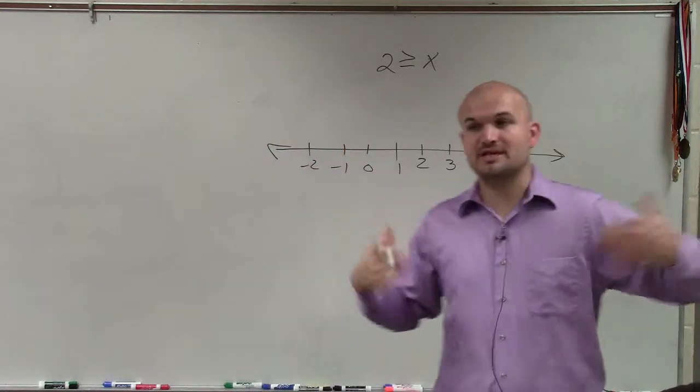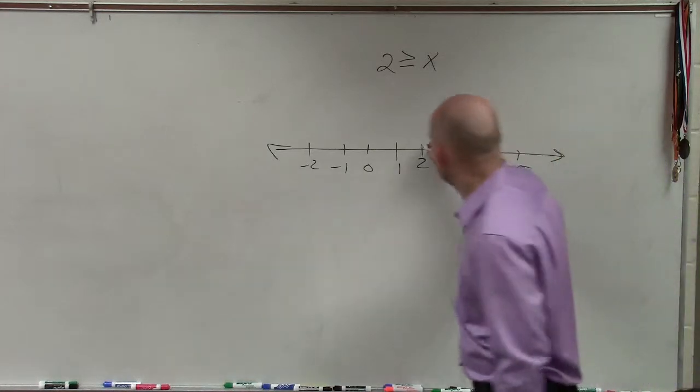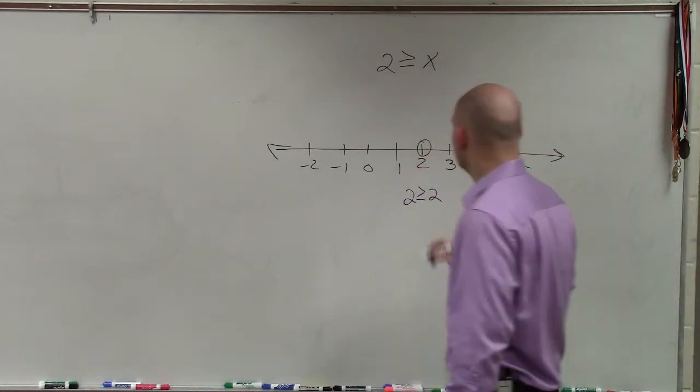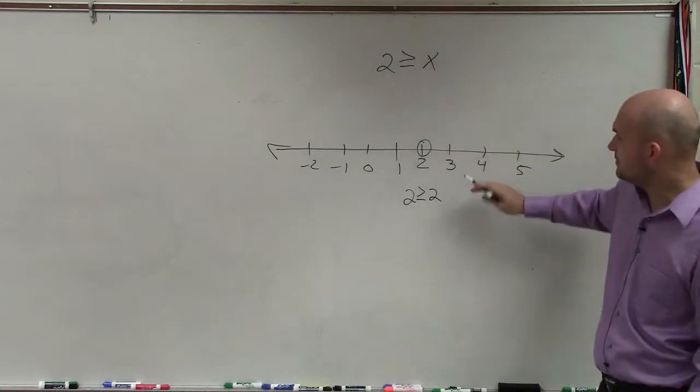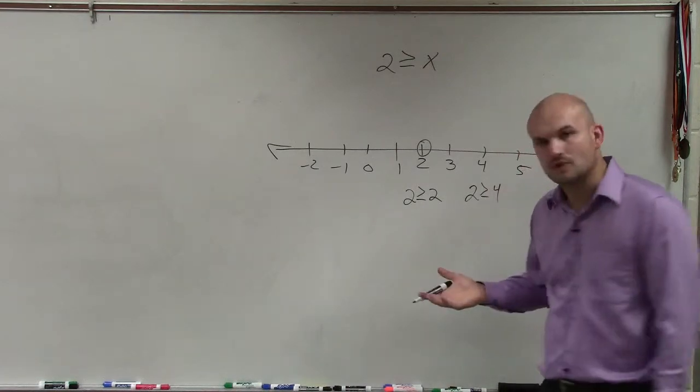Now, in this case, what this reads is 2 is greater than or equal to x. So again, could you do test points? Make a nice big open circle. And you could say, 2 is greater than or equal to 2. Or you could also say, then we just pick another test point. 2 is greater than or equal to 4, right?